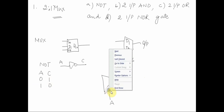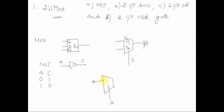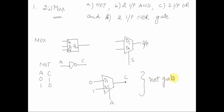If A is 0, we transfer 1 to the output, and this output is nothing but C. So this is one example of implementing a NOT gate using a 2-to-1 MUX. Now let's move on to the 2-input AND gate.